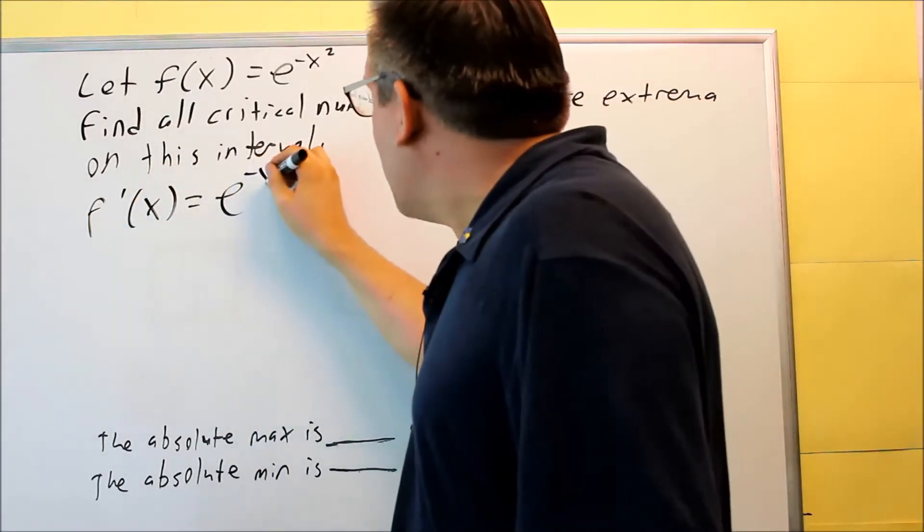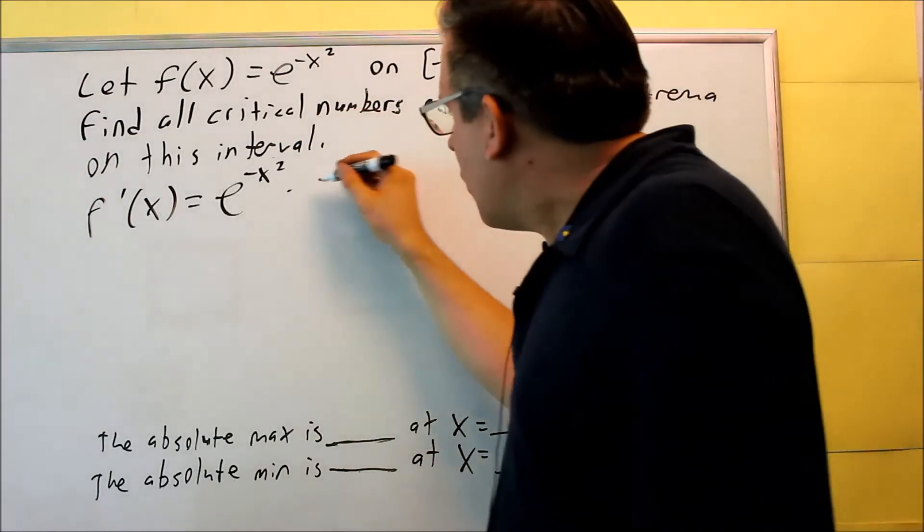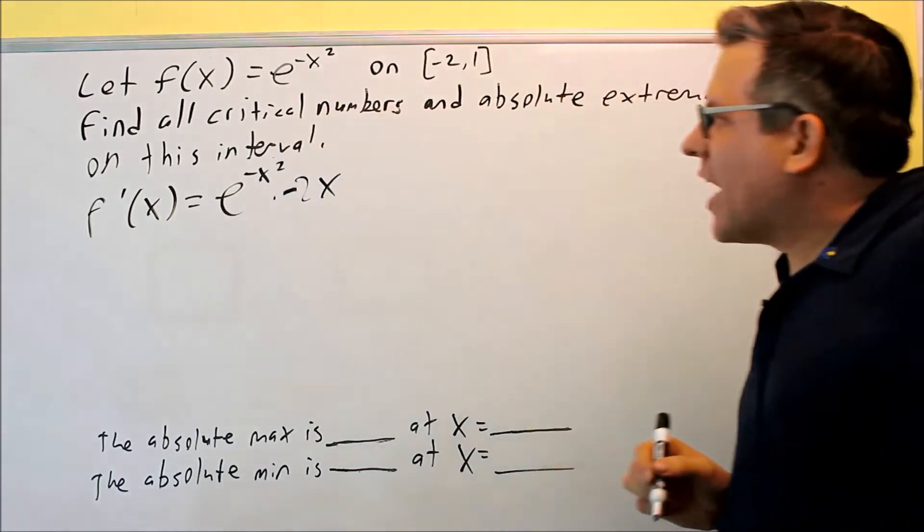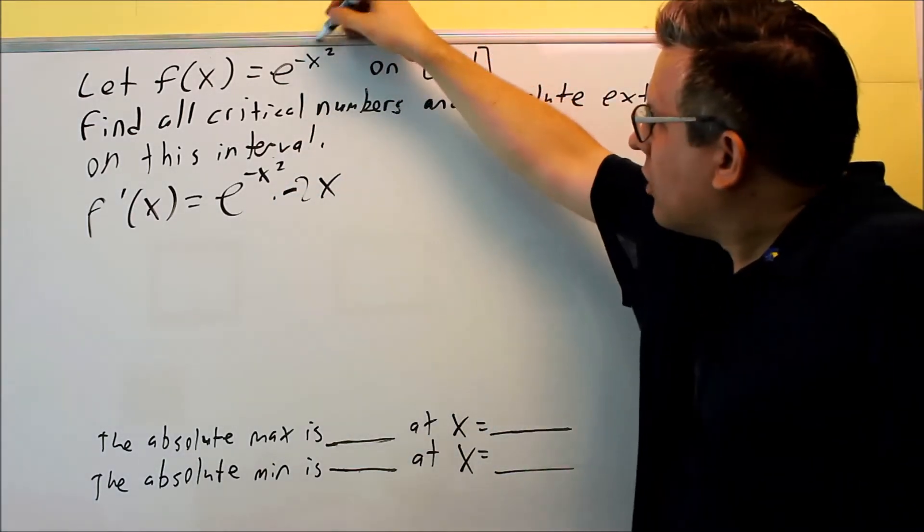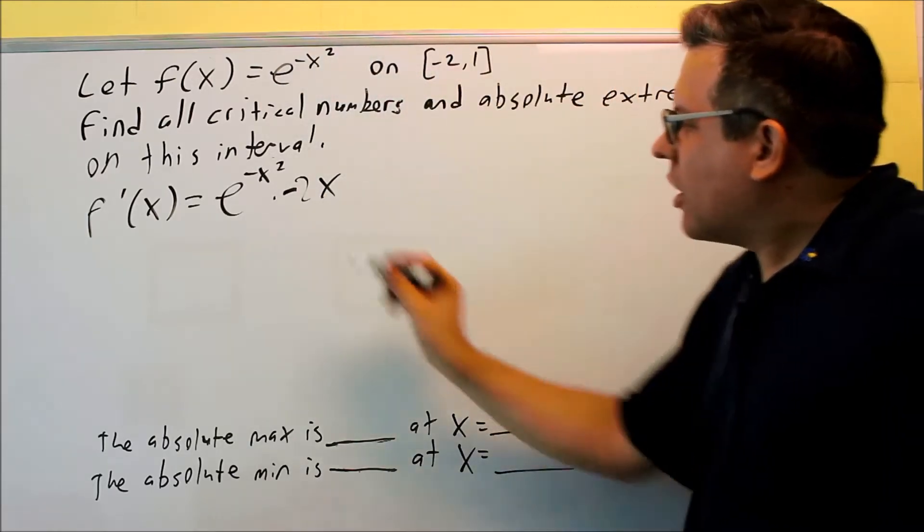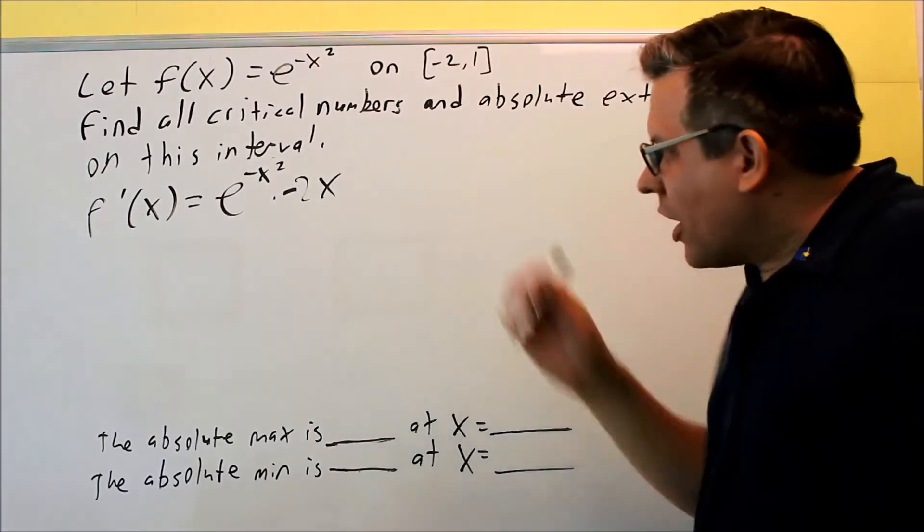I have e to the negative x squared times the derivative of the exponent. So I'm going to get, for that one, negative 2x. So I use a power rule on the exponent. The 2 comes down. I get negative 2x, so I get e to the u times u-prime. Okay, that's it.